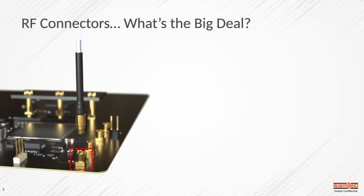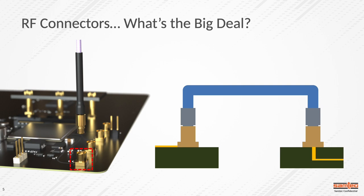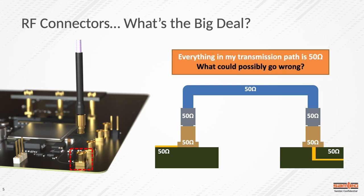Jumping into the technical content — RF connectors. On the left-hand side, we have a connector on a PCB. From a cartoon point of view, we've got a cable with a connector on the end mating into a board-mounted connector, which is mounted on a PCB with a CPW outer layer escape. From a system point of view, we have a 50-ohm system: a 50-ohm PCB going into a 50-ohm connector, into a 50-ohm cable assembly, back through another 50-ohm connector into a 50-ohm strip line. So what could go wrong?